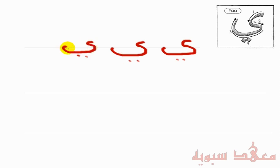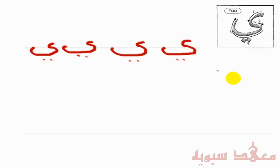There's no extra curve here — that curved too much — it's more like this. Now, this letter in the beginning of a word is not written that way. It's actually similar to the Ba, the Ta, the Tha, and the Noon — it's like this, and then there are two dots.